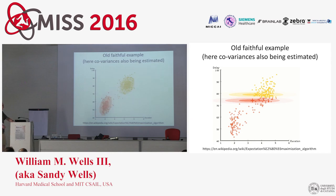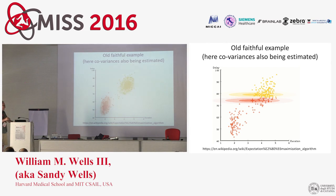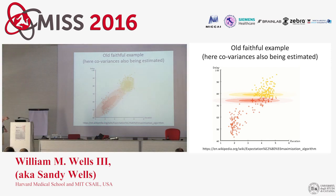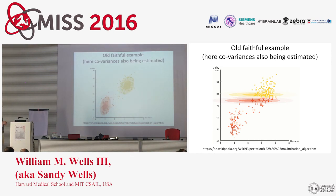Here's a Wikipedia example showing a more general two-component mixture model — two-dimensional mean vectors and two-dimensional covariances — fit to data from Old Faithful geyser. The data is the duration of water spouting and the delay between eruptions. Old Faithful has a bimodal distribution in this joint space. The EM algorithm starts with the two distributions totally disagreeing with the data, then fairly quickly converges to a mixture of two Gaussians that agree nicely with the data.